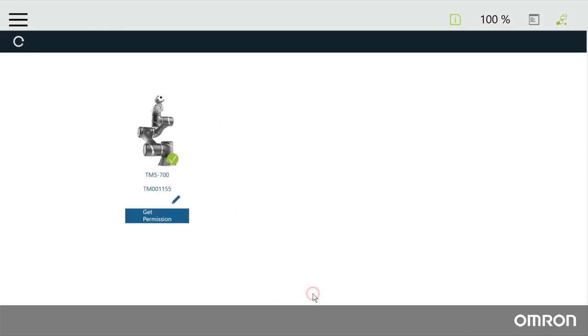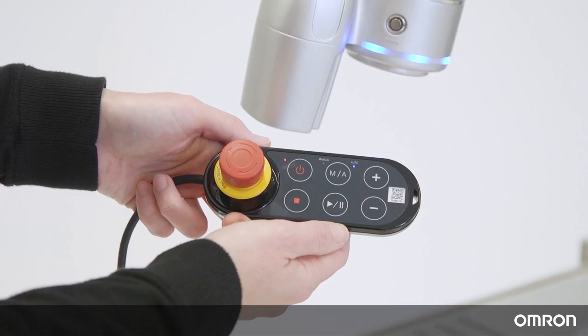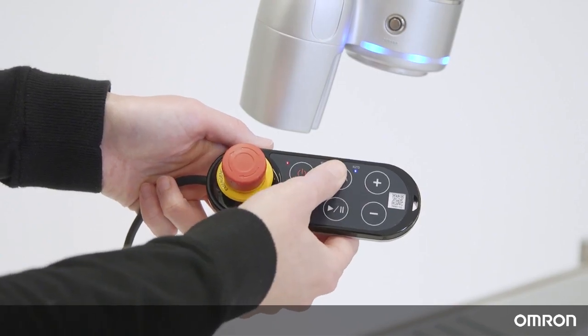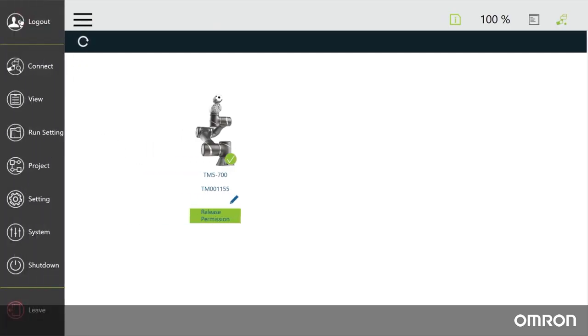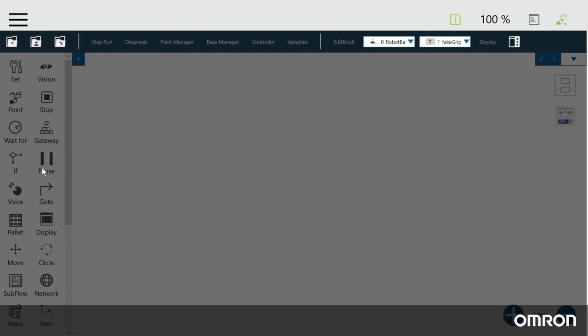When you are back at the main screen, click Get Permission. Switch from auto to manual mode using the robot stick. Then go back to Menu and click on Project to start a new project.